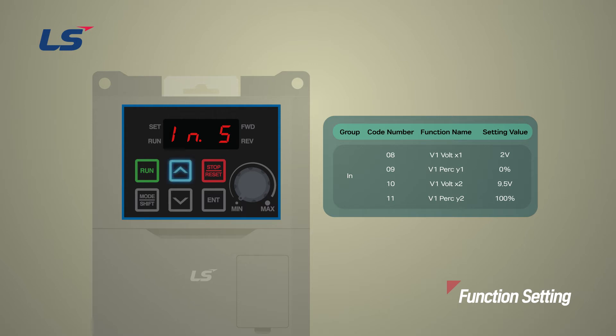Set the minimum input voltage to 2 volts in ingroup 8, and set the corresponding input level to 0% in ingroup 9. Set the maximum input voltage to 9.5 volts in ingroup 10, and set the corresponding input level to 100% in ingroup 11.